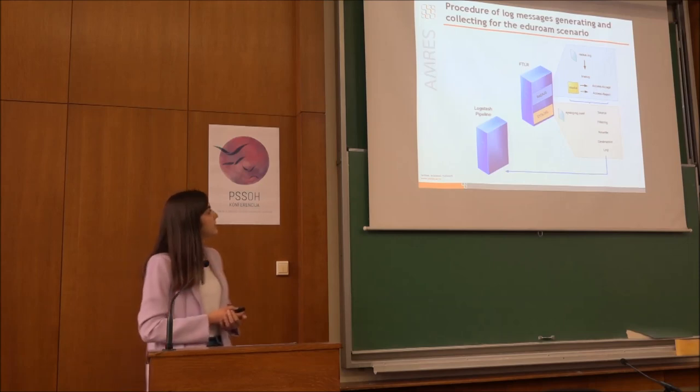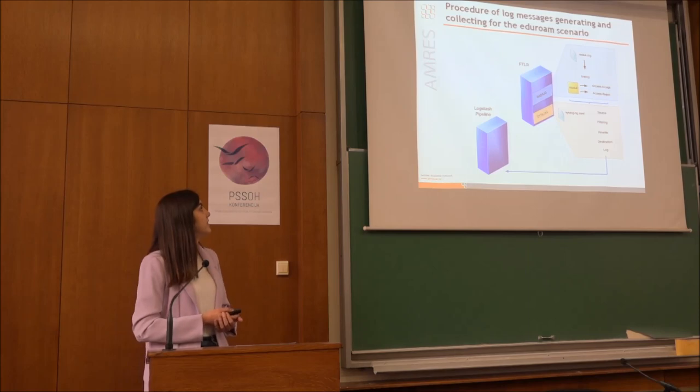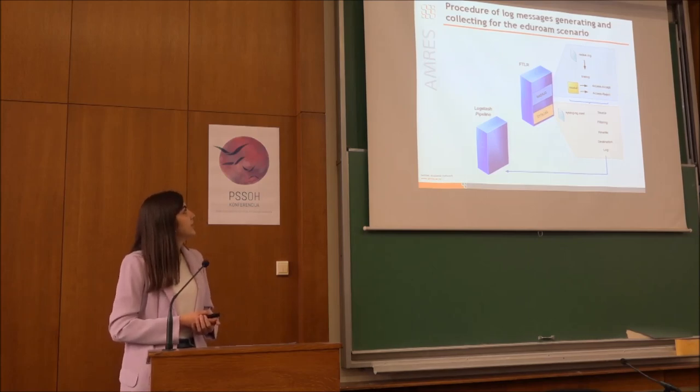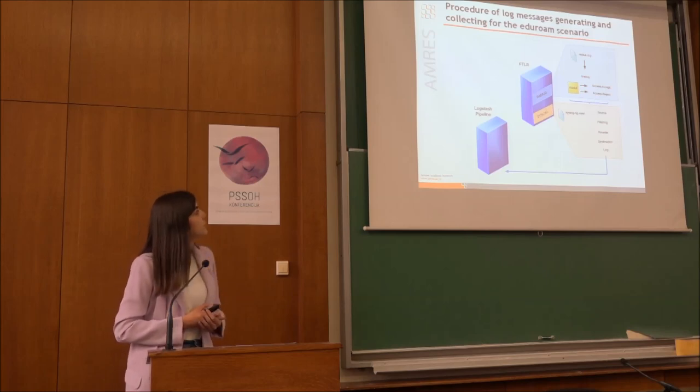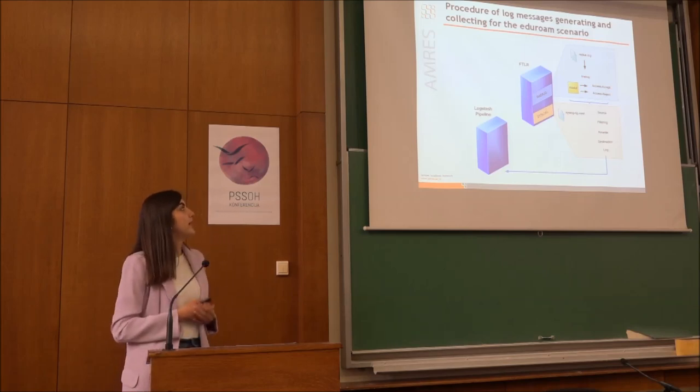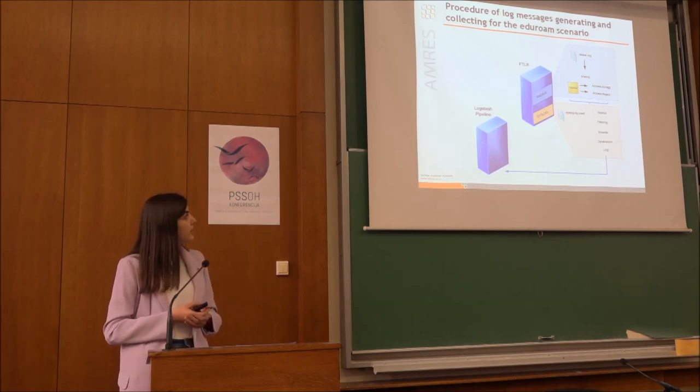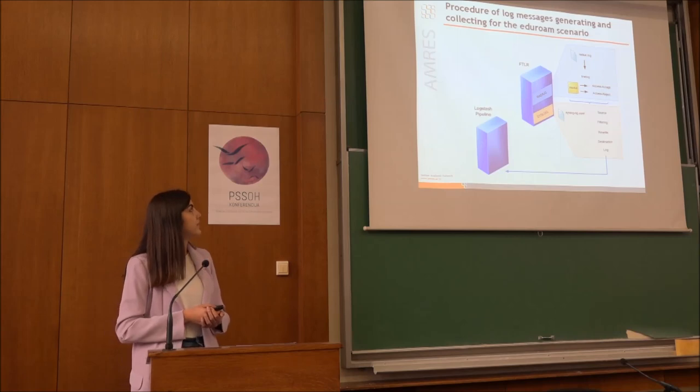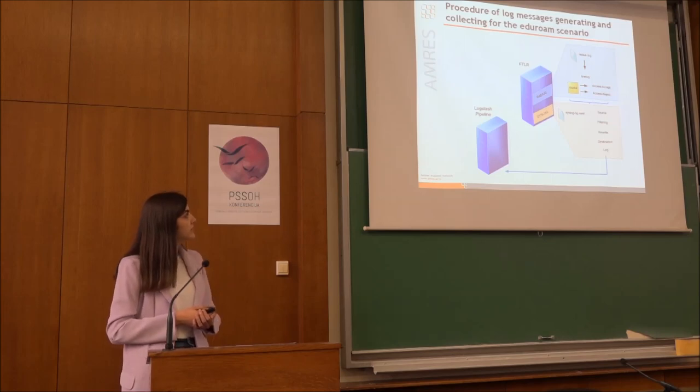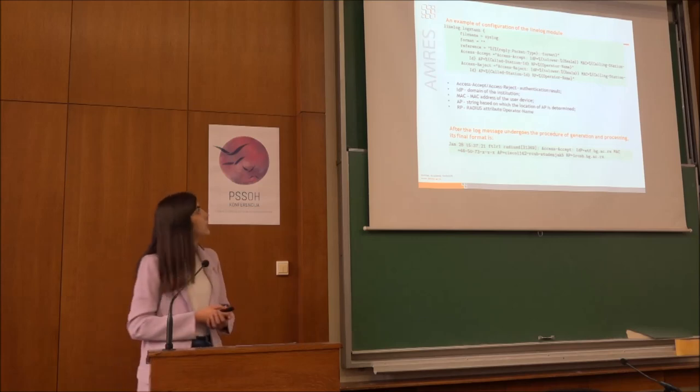Here are implemented FreeRADIUS software and in this configuration file this software records all authentication requests into this radius log file. The records are there in format of the log messages that are stored there as login okay and login incorrect. We are using this linelog module to rewrite these messages so at the end we have for authentication if authentication is successful we have access accept and if it's not we have access reject. Then we use Syslog to collect all these logs and to direct them into the Logstash pipeline server.